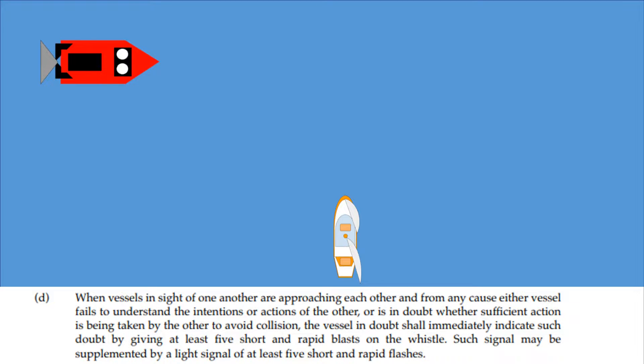So if we're unclear of another vessel's intentions it's at least five short blasts. Not maximum five short blasts, we could do five, six, seven or eight. But short and rapid blasts indicate that we do not understand the vessel's intentions as part of the IRPCS.